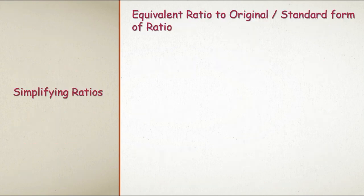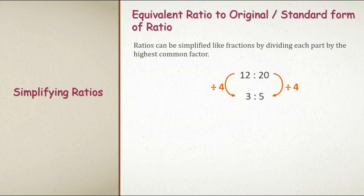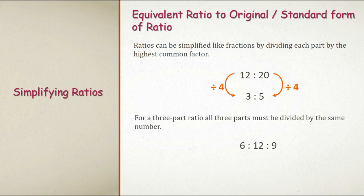Now let us look at simplifying ratios — equivalent to original or standard form. Ratios can be simplified like fractions by dividing each part by their highest common factor. Example: 12 is to 20. The HCF of 12 and 20 is 4. Dividing both by 4 gives 3 is to 5, which is the original form. For a 3-part ratio, all 3 parts must be divided by the same number. For example, 6 is to 12 is to 9 — HCF is 3 — gives 2 is to 4 is to 3.